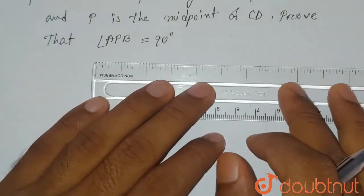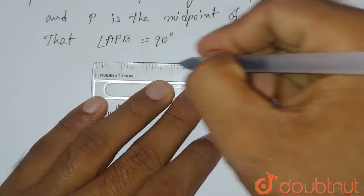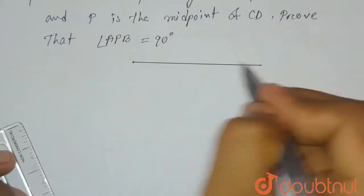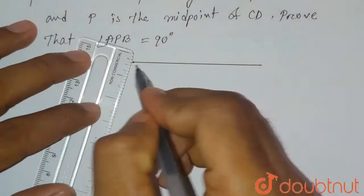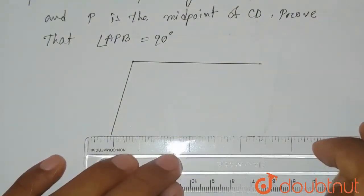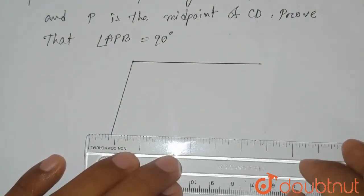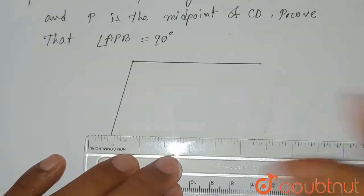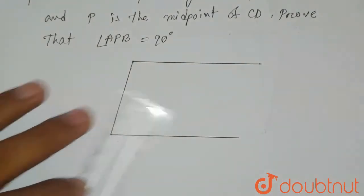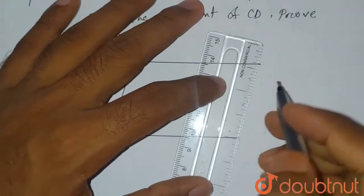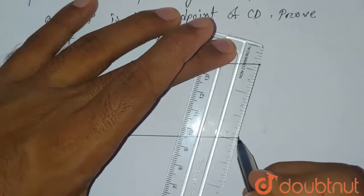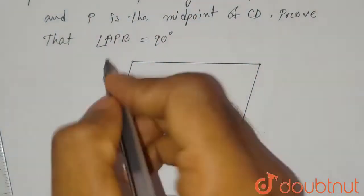Let's say this side is AB — we can take any measurement since no measurement is specified in the question. Now let's draw AD; let's say this point is D. Now we'll draw DC, which will be parallel to AB.